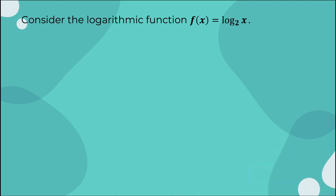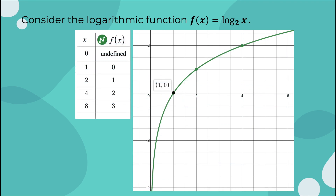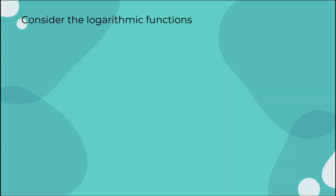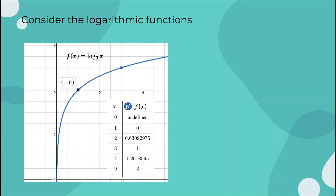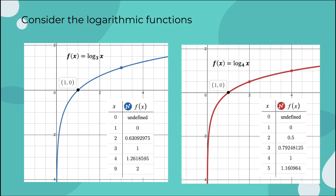Let us consider the logarithmic function f(x) = log base 2 of x. The graph and table of values show that as x increases, the value of y increases. The same behavior is also shown in the graphs of f(x) = log base 3 of x, as well as f(x) = log base 4 of x.